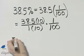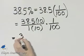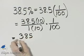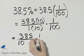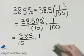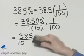Let's now go ahead and simplify. This times ten is three hundred eighty-five. I have one times ten, which is ten, and then I still have times one over one hundred. I think I'll go ahead and write it down there in the denominator.